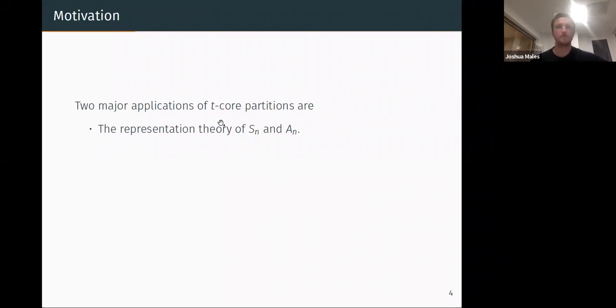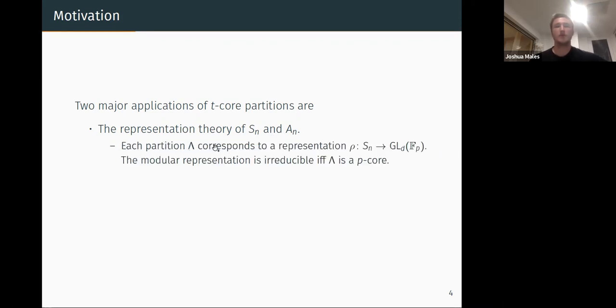Why do we care about these things? So there are two major applications that I've come across. T-core partitions capture the representation theory of the symmetric groups S_n and A_n. How do they do that? Each partition corresponds naturally to some representation that takes S_n to GL_D(F_p) over some finite field, and even better than that is that we know that this representation is irreducible if and only if lambda is a p-core.